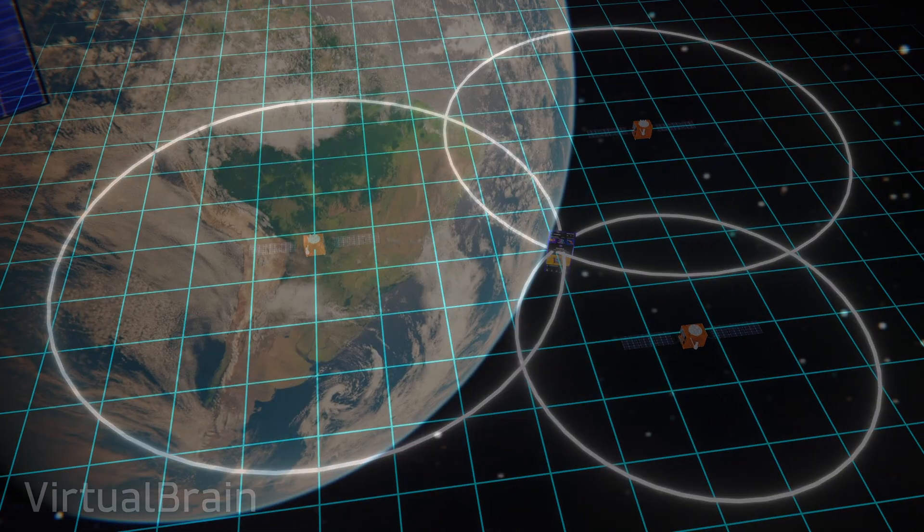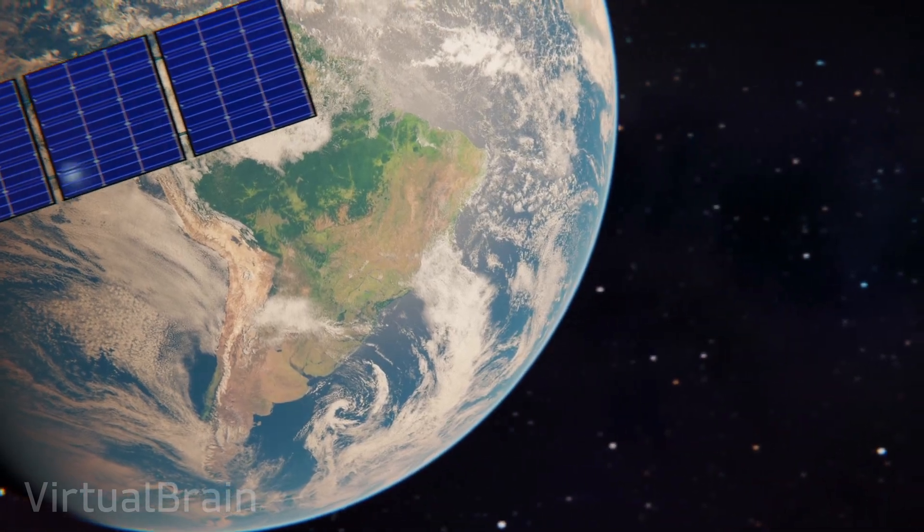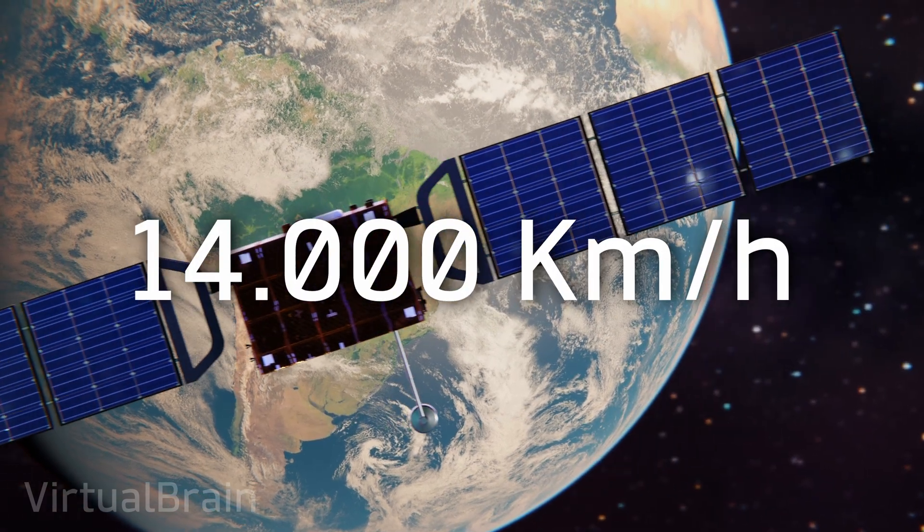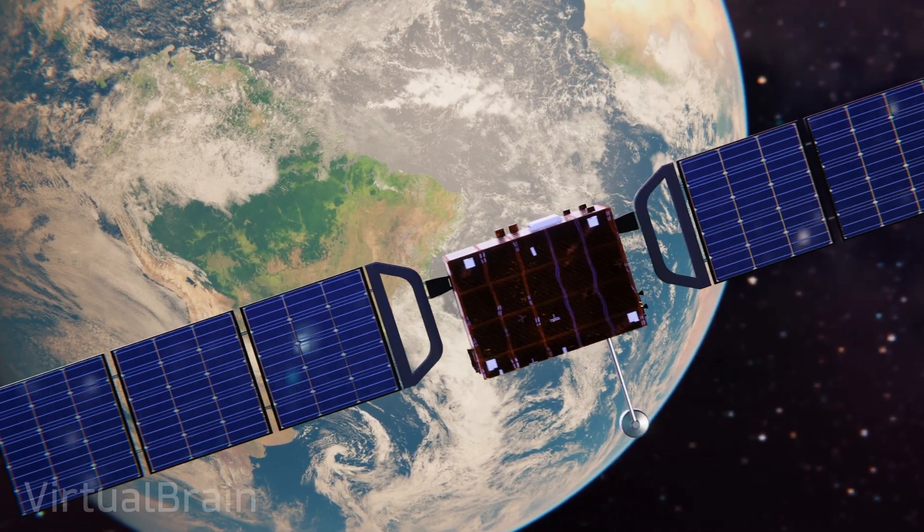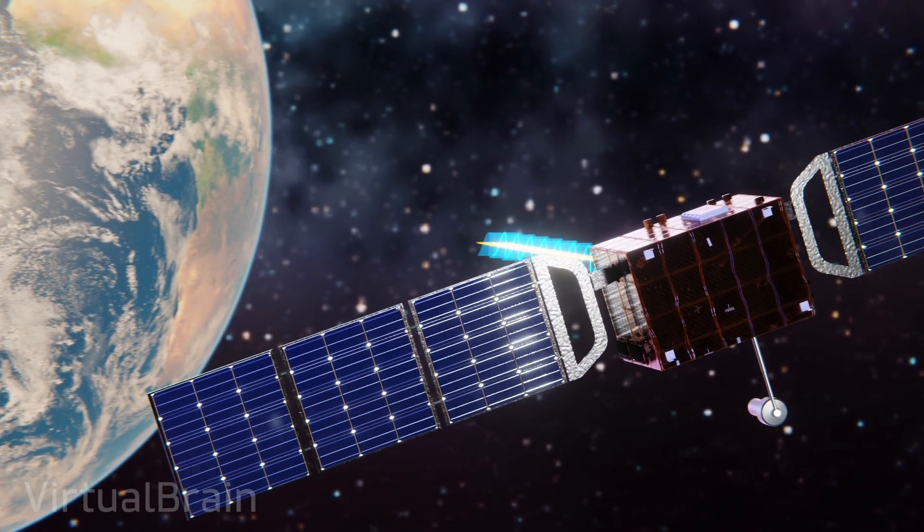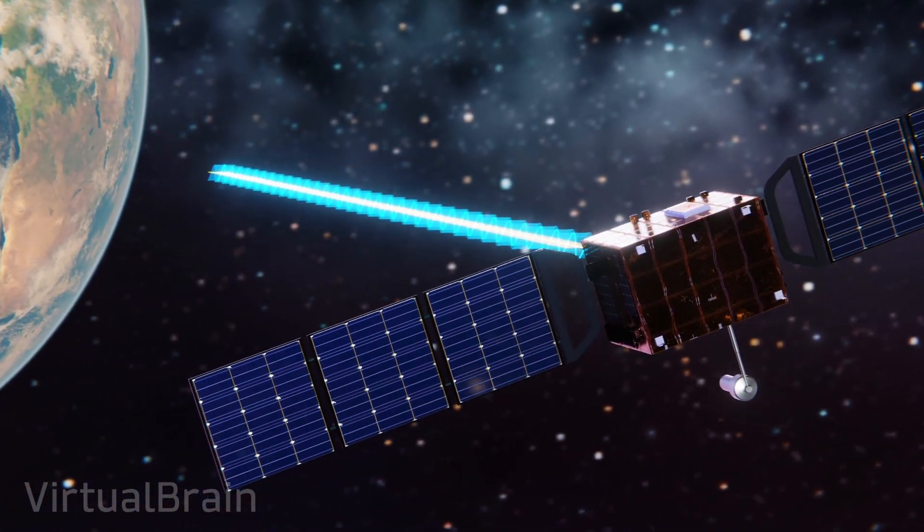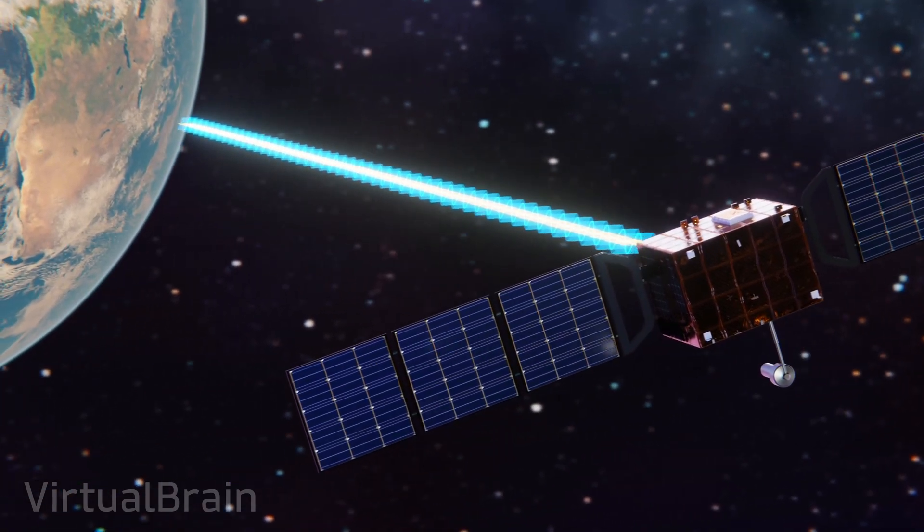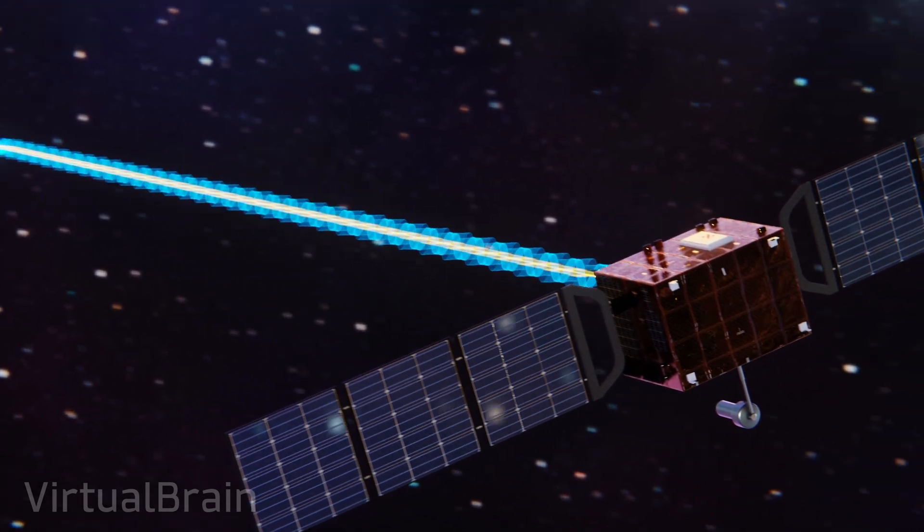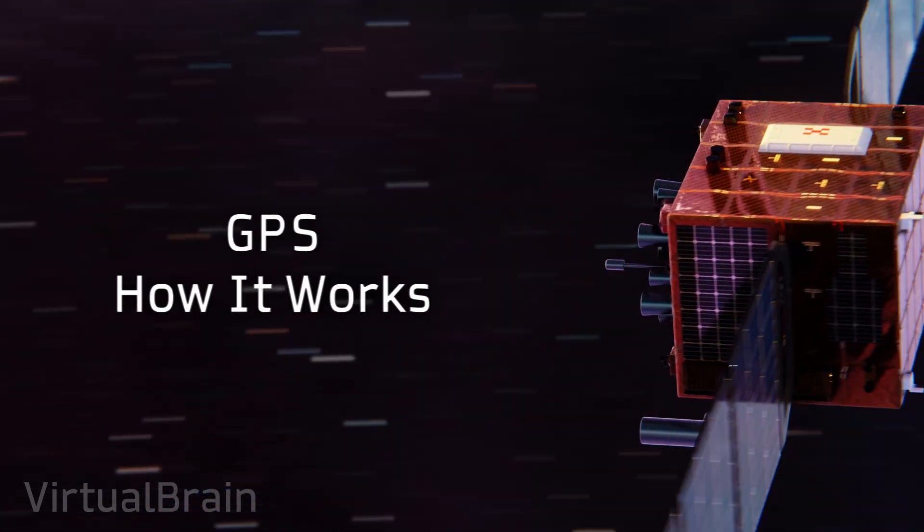It sounds relatively simple, however, we must consider that satellites move at speeds of 14,000 kilometers per hour, and not only that. Since the signals sent travel at approximately the speed of light, a synchronization error of just one microsecond could generate a miscalculation of almost 300 meters in the location. For all this and much more, in this video we will see how GPS works.